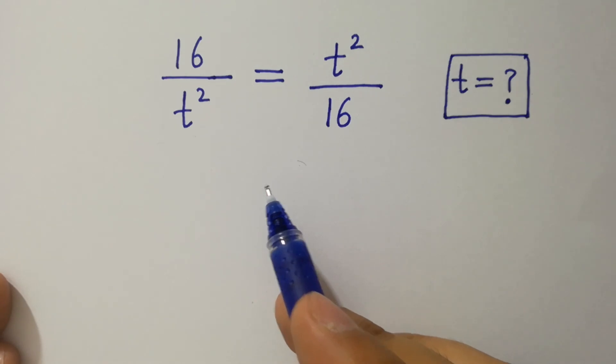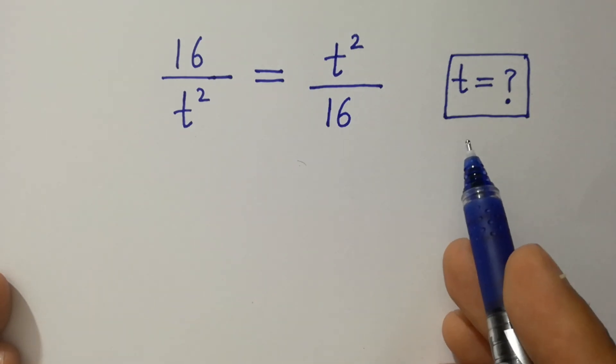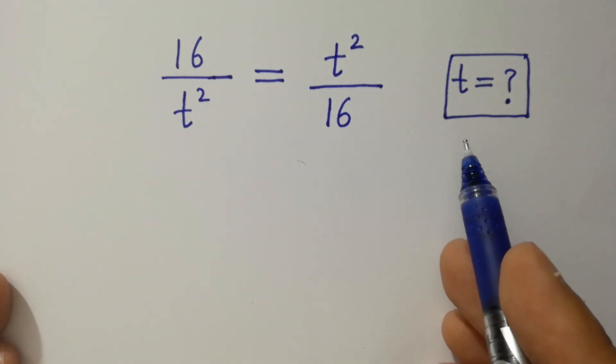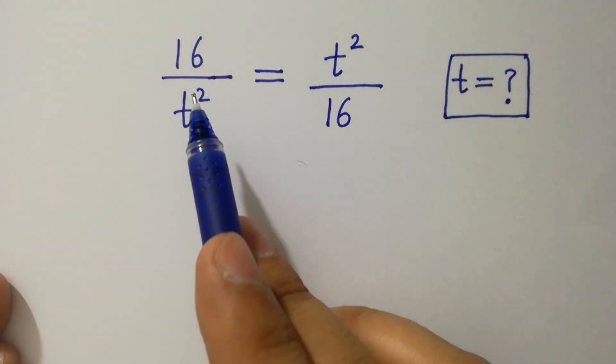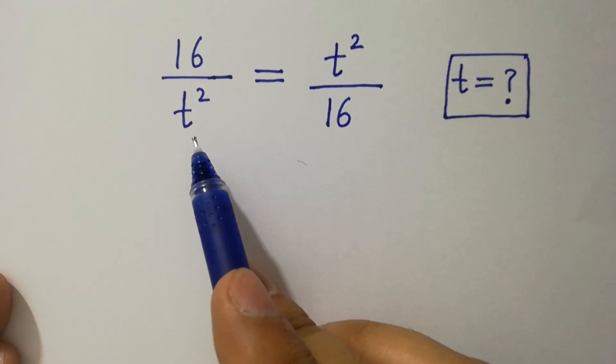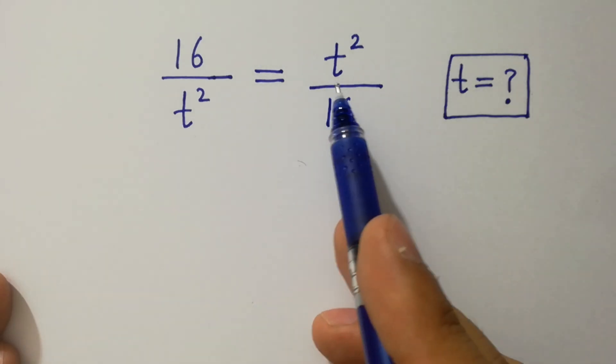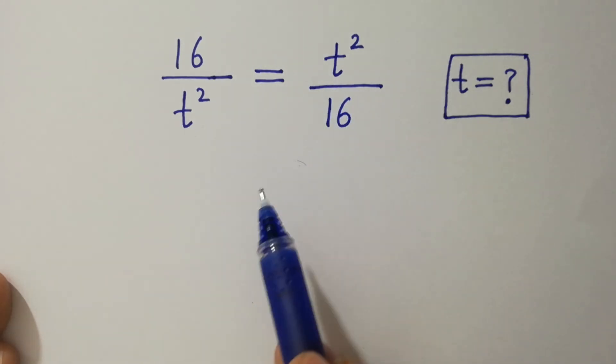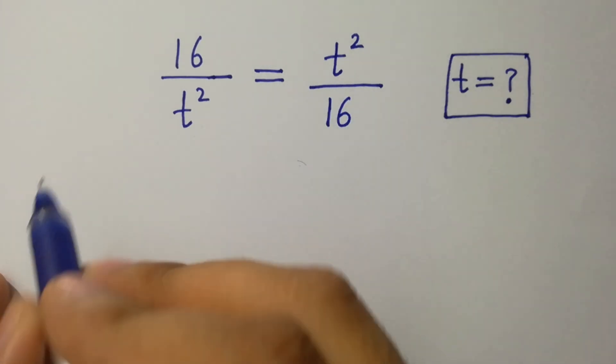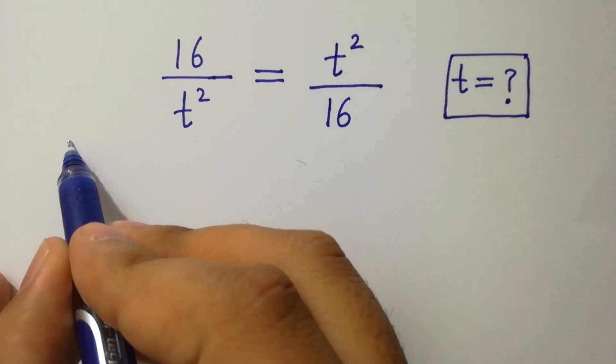Hello friends. Find the value of t if 16 over t squared equals t squared over 16. Let's have a solution.